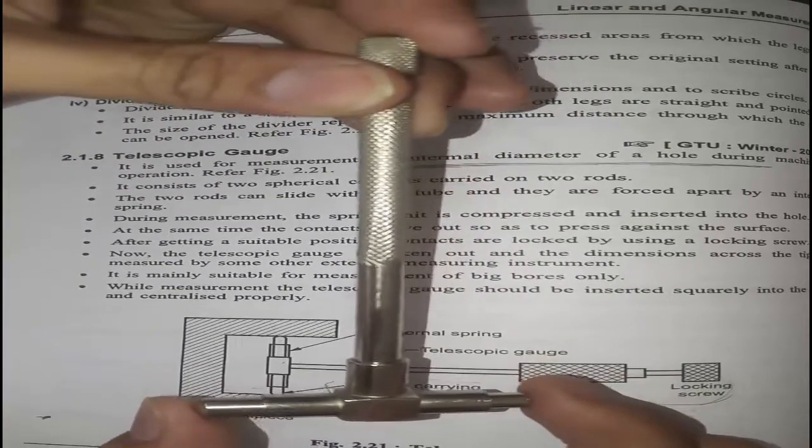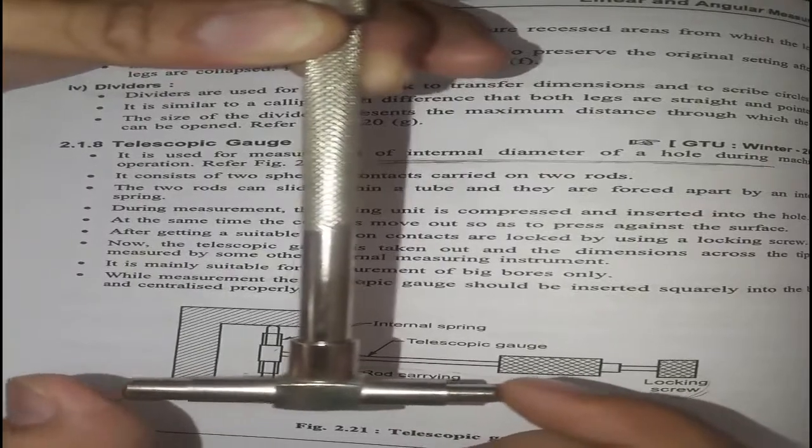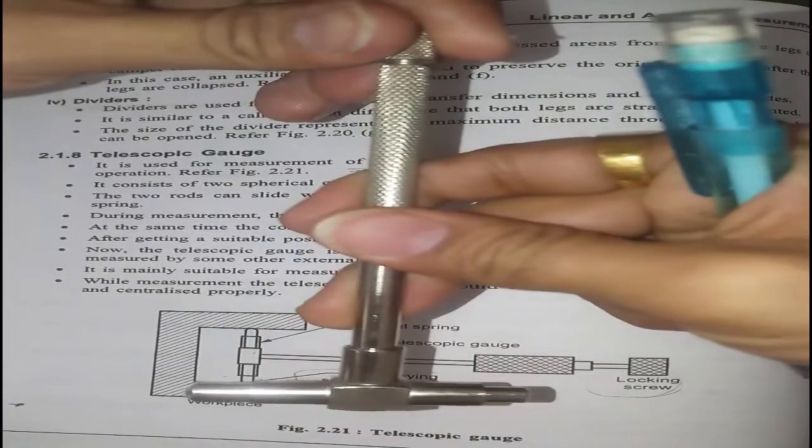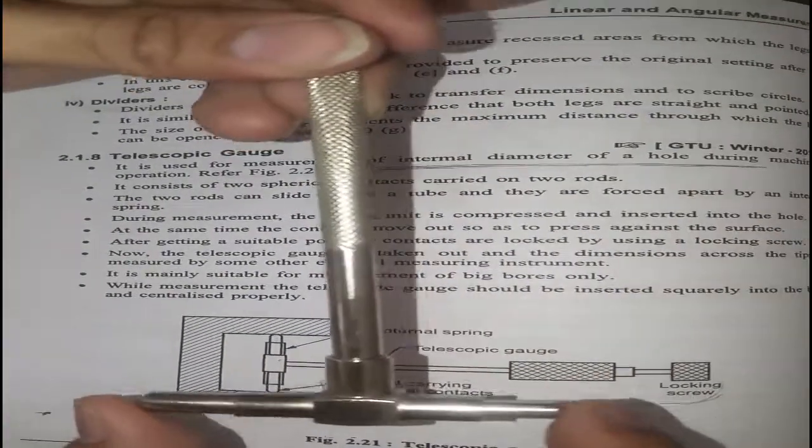Then you can measure this distance. If you unlock, then you can see it works like that.